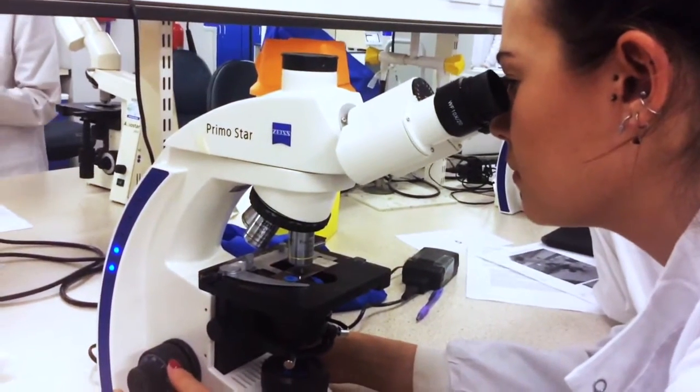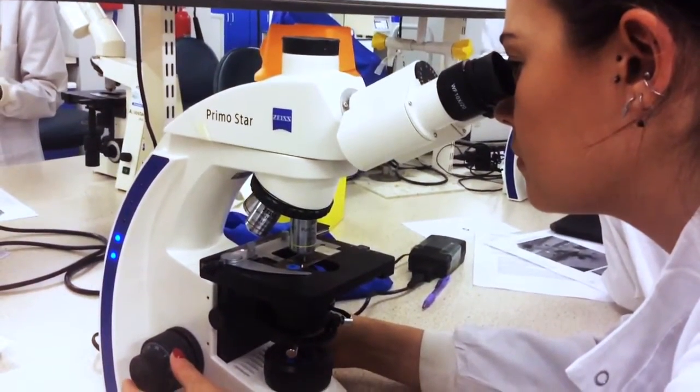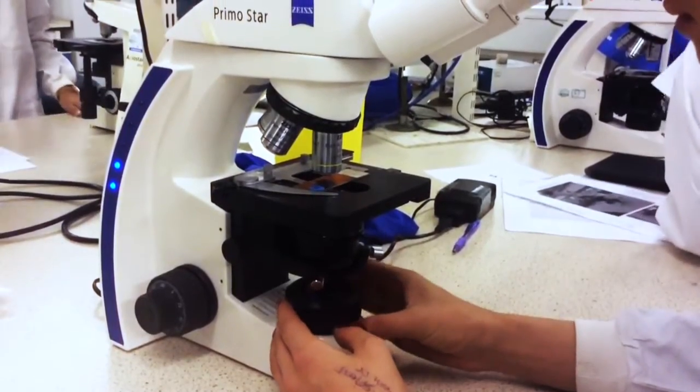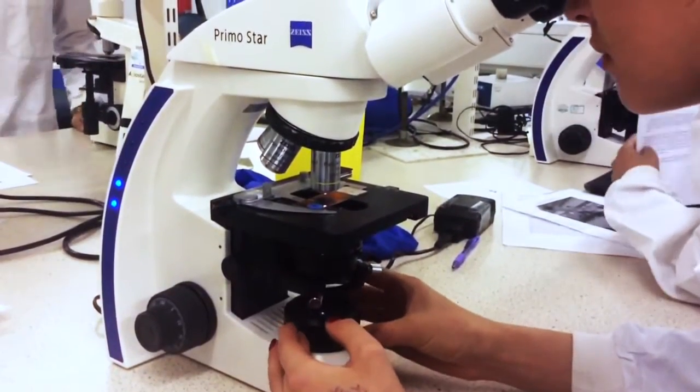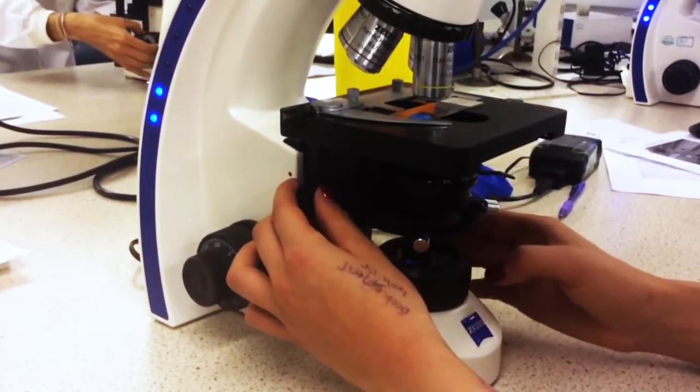Look down the eyepiece and move the stage down using both coarse and fine focus control. Close the field diaphragm using the wheel control. Form an image of the field diaphragm.